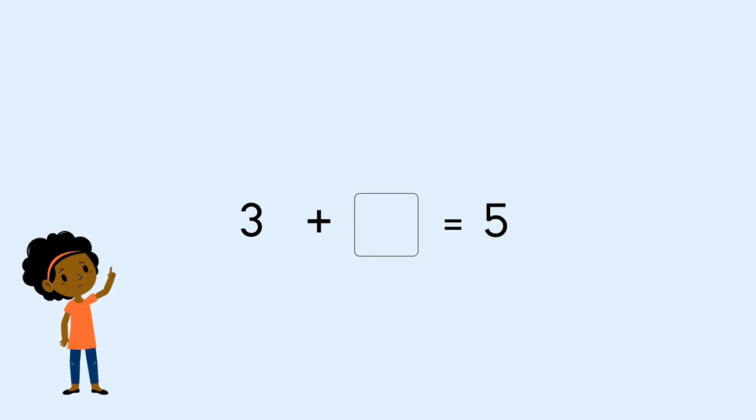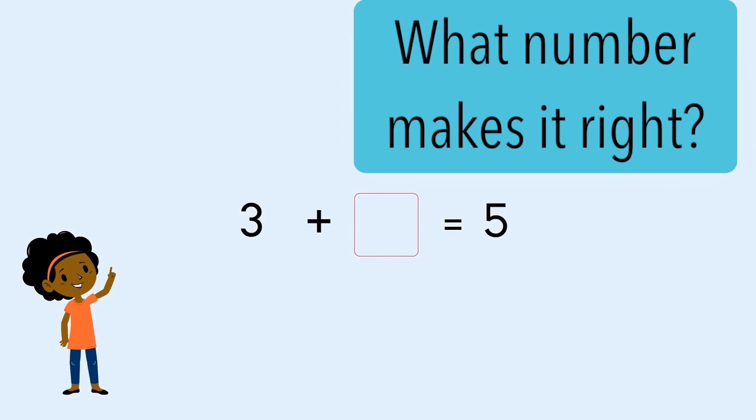So here is our number sentence but we've got a missing number. 3 add something equals 5. We could put anything in the box to make the sentence right or wrong. This means it's an open sentence. It can be right or wrong.